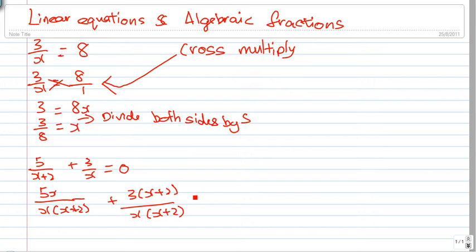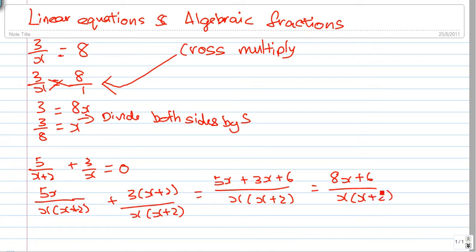And then we'll get 5x plus 3(x plus 2). 5x plus 3x equals to 8x plus 6 over x(x plus 2). Now, actually, this whole function here is actually equals to 0.